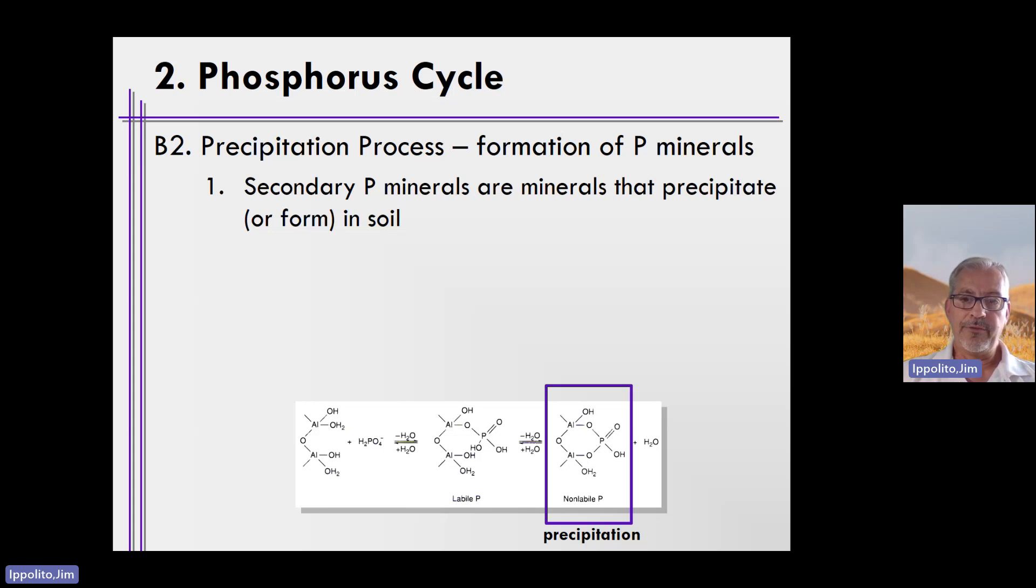You have secondary calcium phosphate mineral phases that form that look almost identical to the primary mineral phase. And then as soils continue to weather and go from basic pH, which is where we find apatites and calcium phosphate minerals, to acidic, the calcium phosphates dissociate.